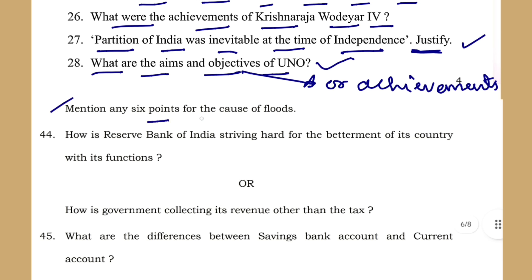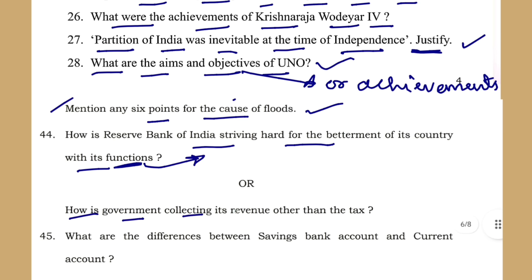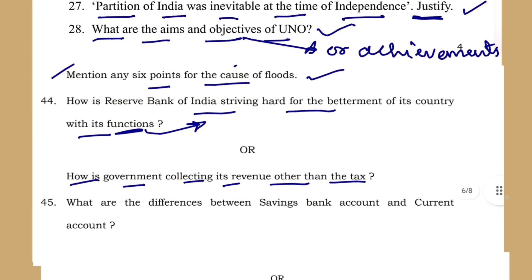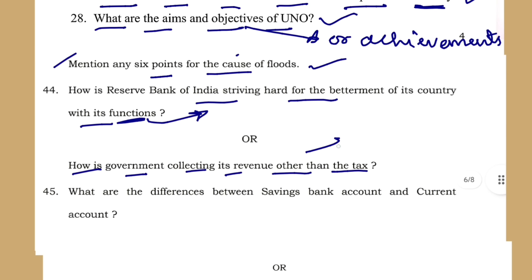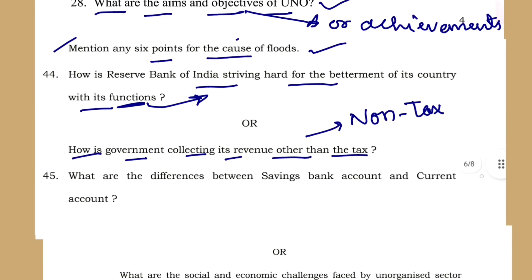Mention any six points for the causes of floods. How is the Reserve Bank of India striving hard for the betterment of the country through its functions? You should write the functions of RBI. Then: how is the government collecting revenue other than tax? So non-tax revenue sources — that question will be asked every year.